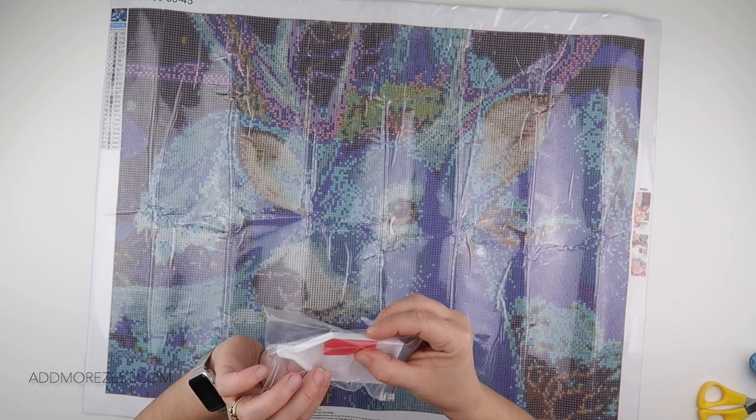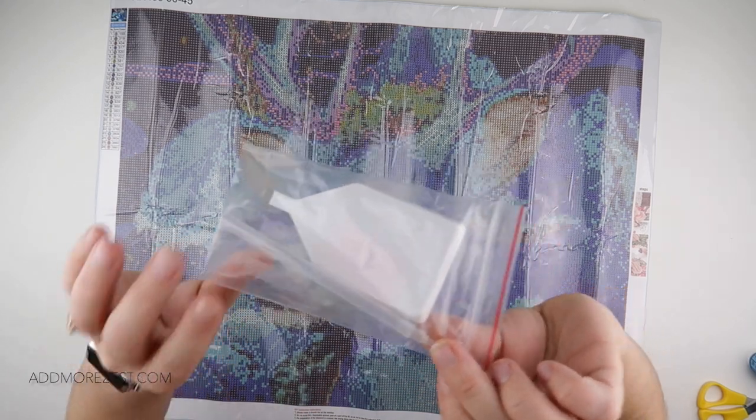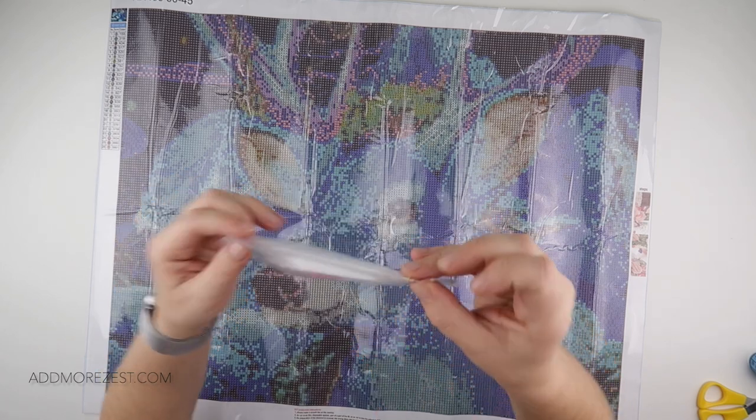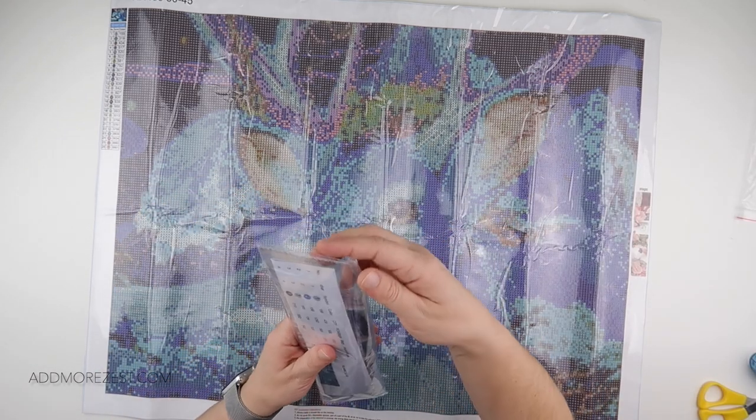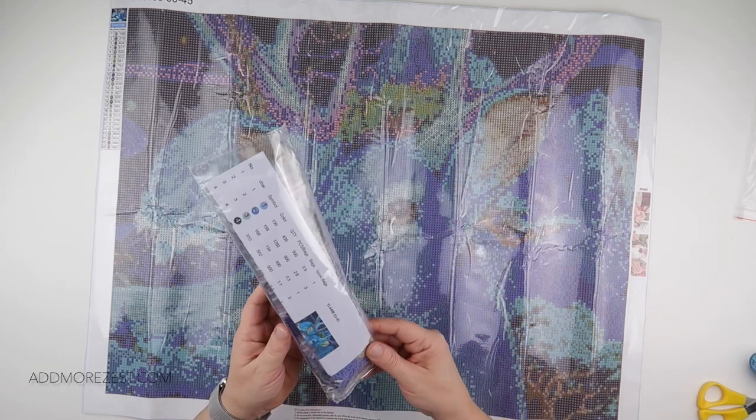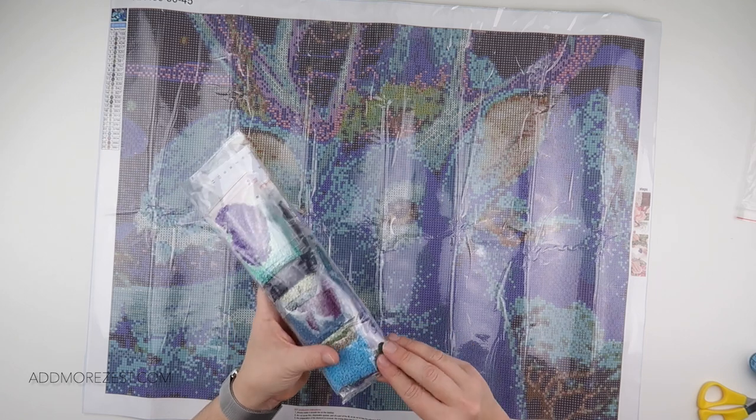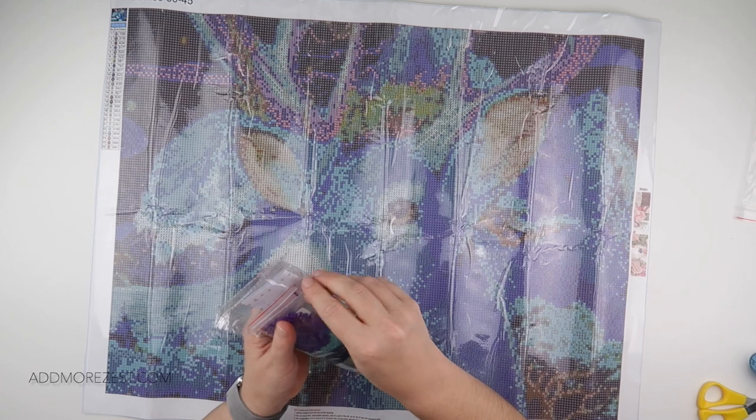Looks to be a three and then a six or a seven. And it comes with a clear diamond painting pen with a single placer tip. And then, oh, it comes with baggies! I like when it comes with baggies.